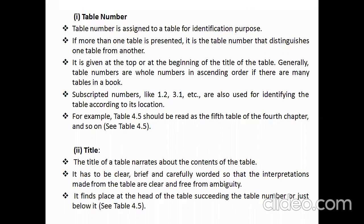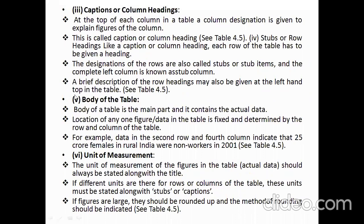The title of the table narrates about its content. It should be clear, brief, and carefully worded so that interpretations are clear. It is placed at the head of the table, just below or alongside the table number. Captions are column headings at the top of each column, giving designations to explain figures of that column. Row headings, called stubs or stub items, are given for each row of the table. The complete left column is known as the stub column, and a brief description may be given at the top left of the table.